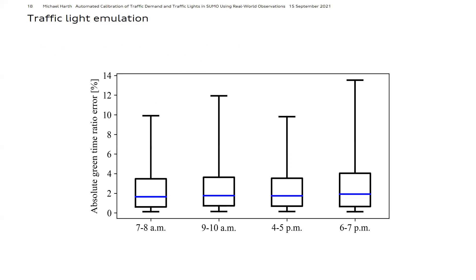Validation of the emulated traffic lights is conducted based on one week of data, Monday to Friday, for four time intervals: 7–8 and 9–10 in the morning, and 16–17 and 18–19 in the evening. We evaluated the percentage of green time of each signal group relative to the cycle time and compared distributions of ratios for emulated versus real traffic lights. Box plots show median errors of about 1.6 to 1.9 percent, with smaller error distributions in peak hours at 7–8 and 16–17. Larger errors in off-peak hours are due to a higher proportion of public transport prioritization, which increases variability in traffic light switching.